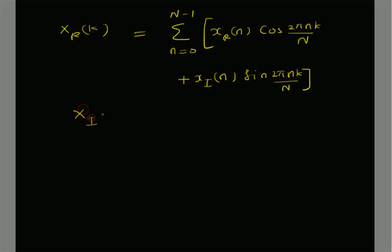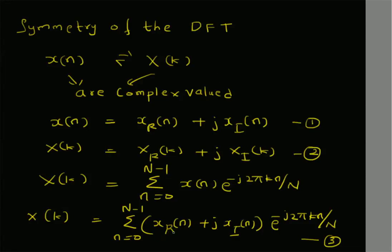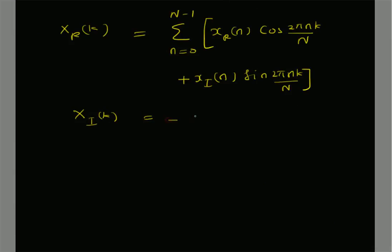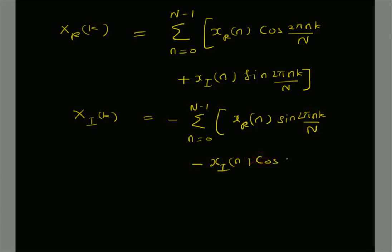Similarly, the imaginary component x i of k is given by the multiplication of x r of n with the imaginary component, that is the sine function, and x i of n with the real component, that is the cosine function. So we have: minus summation n equal to 0 to N minus 1 of x r of n sin of 2 pi n k by capital N, minus x i of n cos of 2 pi n k by capital N. Let us call these equations 4 and 5.